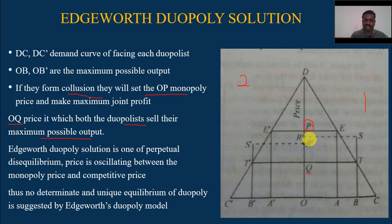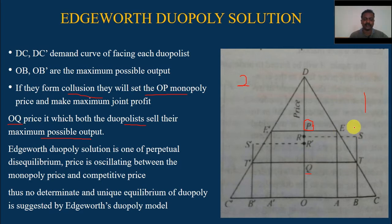With Producer 2's price remaining fixed at OP1, Producer 1 realizes that if he sets his price slightly below OP1, he will be able to attract a sufficient number of Producer 2's customers so that he can sell his maximum output of OBE.